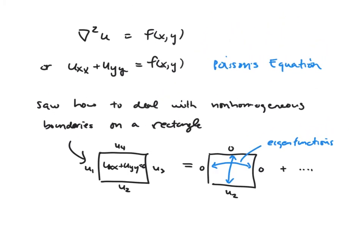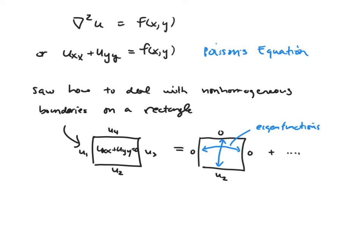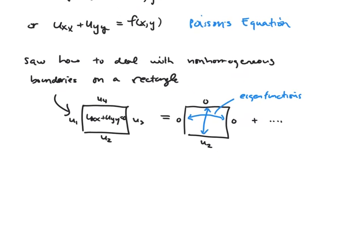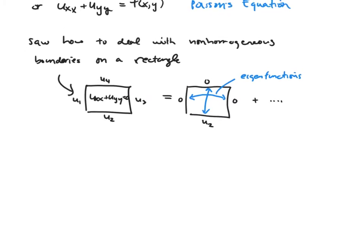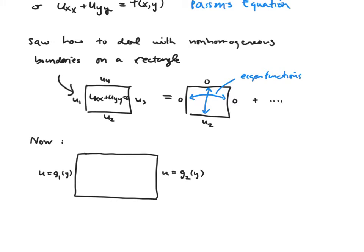Now we have a non-homogeneous PDE layered on top of potentially non-homogeneous boundary conditions. So now we're going to up the situation with non-homogeneous PDEs. On the bottom and top we have some functions of x, f1 and f2, and on the left and right some functions of y, g1 and g2. And in the middle we have Poisson's equation — non-homogeneous boundaries and non-homogeneous PDEs all set upon one another.